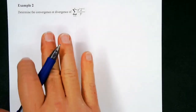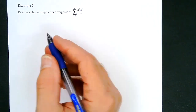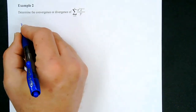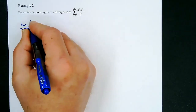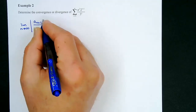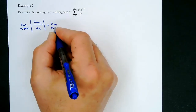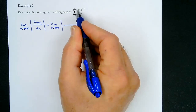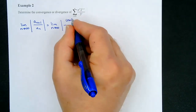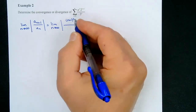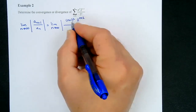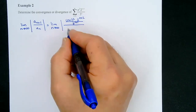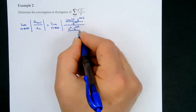Let's go to example number two. We want to determine the convergence or divergence of this series. Since we have some exponentials, I'd use the ratio test. We take the limit as n approaches infinity of the absolute value of a_(n+1) over a_n. Substituting n+1: the numerator becomes (n+1)² over 3^(n+1), and then we multiply by 2^(n+2) — wait, let me set this up: a_(n+1) = (n+1)² · 2^(n+2) / 3^(n+1), and a_n = n² · 2^(n+1) / 3^n.